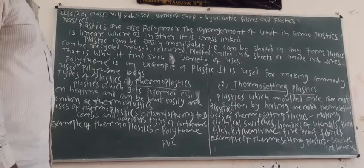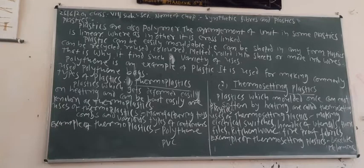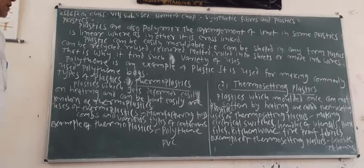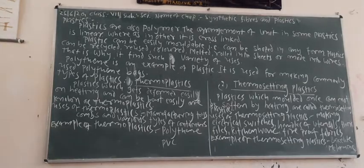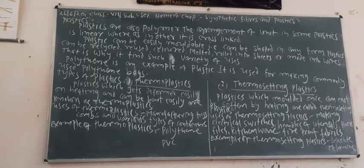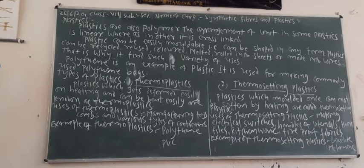Plastic can be moulded, can be recycled, can be reused, and can be re-moulded again and again. This is why we find such a variety of colours and such a variety of uses for plastic.